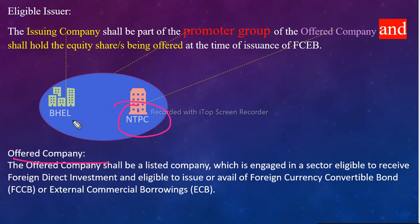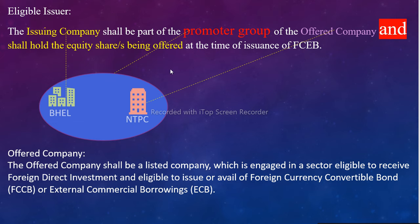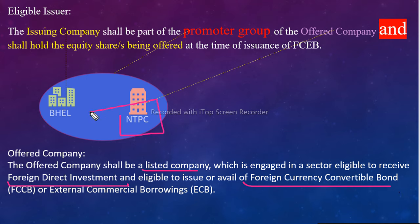The offered company shall be a listed company, which is engaged in a sector eligible to receive Foreign Direct Investment and eligible to issue or avail Foreign Currency Convertible Bonds and External Commercial Borrowings. To dhyan mein rakhna: maturity date par hum sirf usi company ke shares de sakte hain jo same promoter group ko belong karti hai, jo listed bhi ho, jo FDI receive karne ke liye eligible ho, aur jo Foreign Currency Convertible Bonds issue karne ke liye eligible ho. Agar NTPC aur BHEL yeh sab conditions fulfill karte hain, to haan, main Foreign Currency Exchangeable Bond issue kar sakta hoon. I hope the point is clear. Thank you so much.